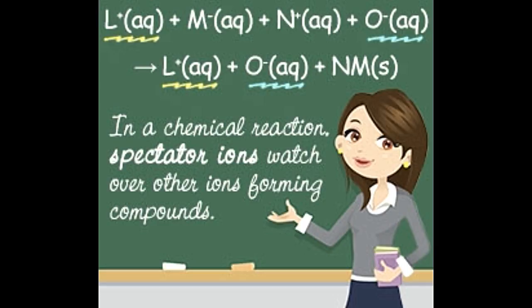They are atoms or a group of atoms that do not change chemically or physically during the course of a reaction. In order to understand the concept of spectator ions, we first need to understand the concept of net ionic equations. Net ionic equations are formed by removing the spectator ions from an entire ionic equation.